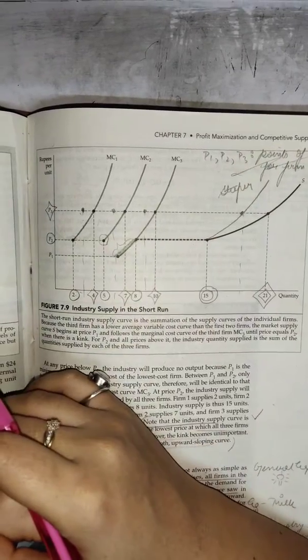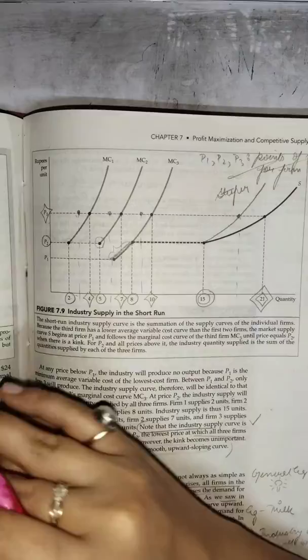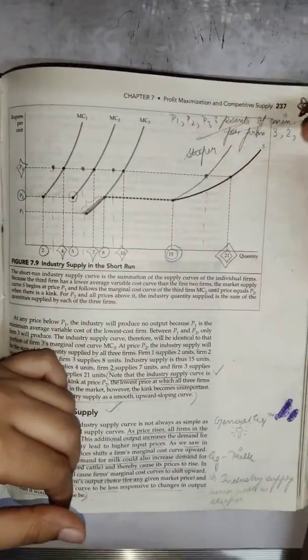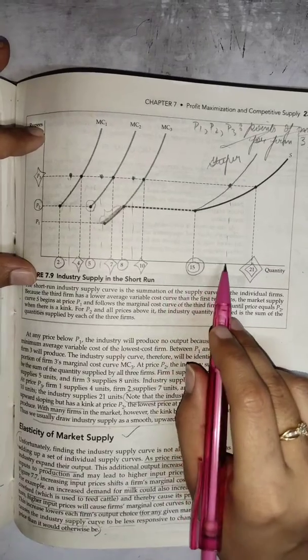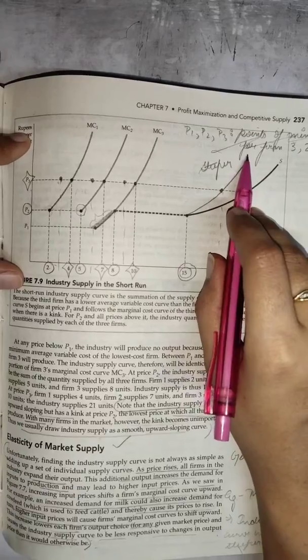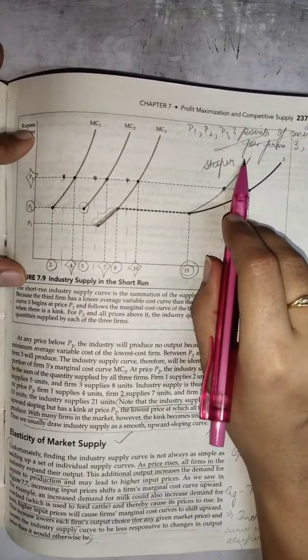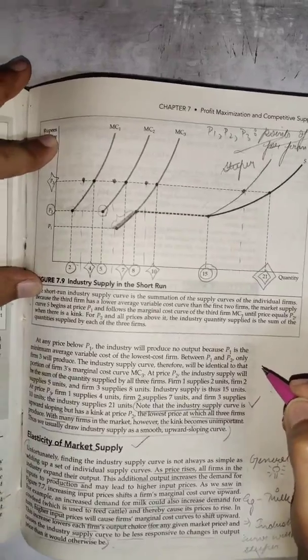The steeper market supply curve has repercussions. What does it imply? This implies that whenever the price is changing, quantity response is weaker. That means this is less elastic. This brings to the home the point of discussion today, elasticity of market supply.